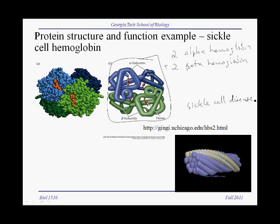In sickle cell disease, under certain conditions, the hemoglobin tetramers stack and form fibers. These fibers are hemoglobin molecules in their tetrameric form — the tetramers associate with each other to form fibers that cause deformation of the red blood cell. The red blood cell turns into a sickle shape, which gets clogged as it passes through capillaries, loses oxygen-carrying capacity, and therefore we have anemia and lots of red blood cell damage.